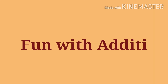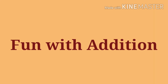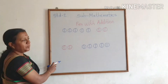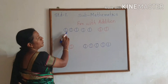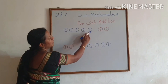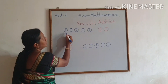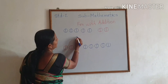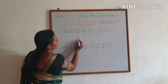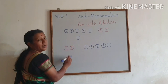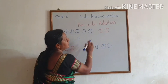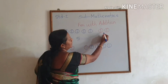Fun with Addition. Look at the whiteboard and count the blue colored balls: 1, 2, 3, 4, 5. Blue colored balls are 5. Then count the red colored balls: 1.